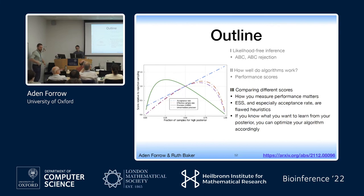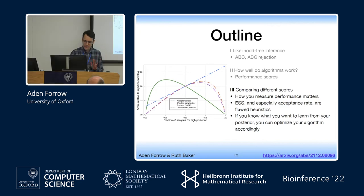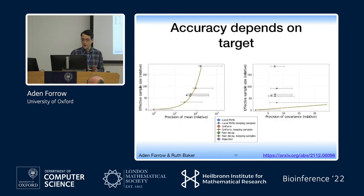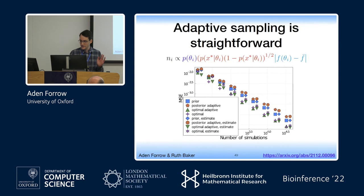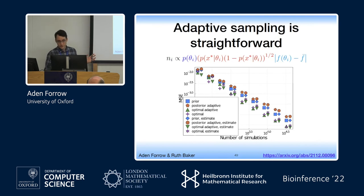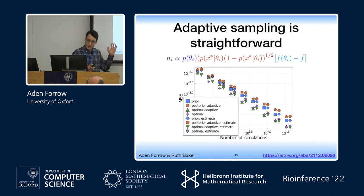Question: How do you modify the approach if you're interested in both the mean and the variance? Answer: There's going to be some trade-off between those two. This framework does not require the assumption that f is a scalar function. One straightforward thing is to say: I care this much about the mean, this much about the second moment, put those in a vector, and do this with the norm of that vector.